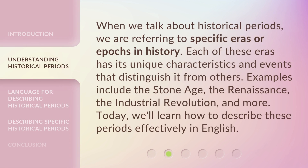When we talk about historical periods, we are referring to specific eras or epochs in history. Each of these eras has its unique characteristics and events that distinguish it from others. Examples include the Stone Age, the Renaissance, the Industrial Revolution, and more. Today, we'll learn how to describe these periods effectively in English.